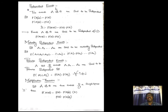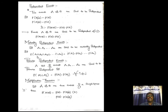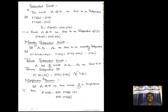Definition — Independent Events: Two events A and B are said to be independent if P(A ∩ B) = P(A)·P(B). Mutually Independent Events: A₁, A₂, …, Aₙ are mutually independent if P(A₁ ∩ A₂ ∩ … ∩ Aₙ) = P(A₁)·P(A₂)·…·P(Aₙ). Pairwise Independent Events: The condition is P(Aᵢ ∩ Aⱼ) = P(Aᵢ)·P(Aⱼ).